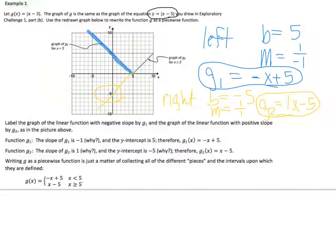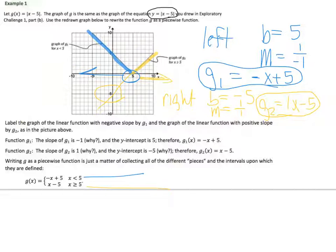Label the graph of the linear function with the negative slope as g1, and the graph with the positive slope as g2. G1 has slope negative 1 and y-intercept 5. G2 has slope 1 and y-intercept negative 5. Writing g as a piecewise function is just a matter of collecting all the different pieces and the intervals upon which they are defined. The left piece is when x is less than 5, and the right piece is when x is greater than 5. That right there is our piecewise function.